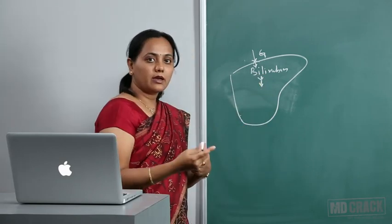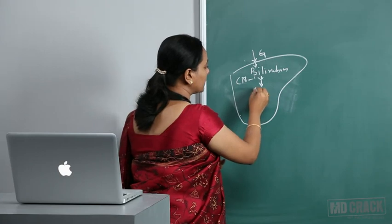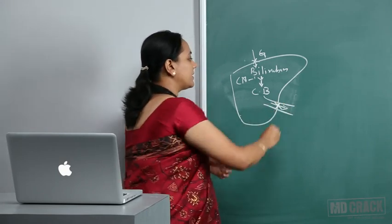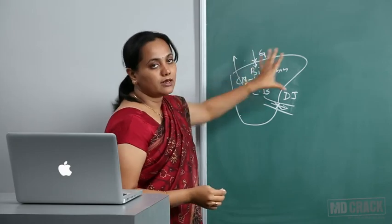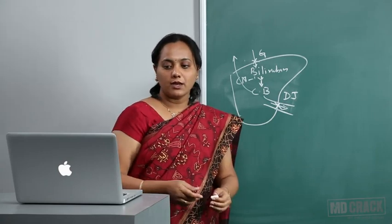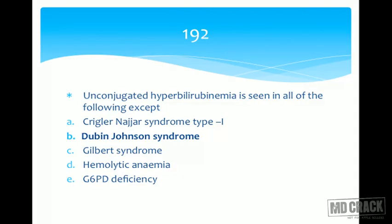Crigler-Najjar type 1 and type 2 is because of deficient conjugation. Conjugated bilirubin is then excreted; if the defect is in excretion you call it Dubin-Johnson syndrome, so conjugated bilirubin increases in blood. Gilbert's, Crigler-Najjar have unconjugated hyperbilirubinemia. Hemolytic anemia and glucose-6-phosphate dehydrogenase deficiency cause hemolysis leading to unconjugated hyperbilirubinemia. So all except Dubin-Johnson show unconjugated hyperbilirubinemia.